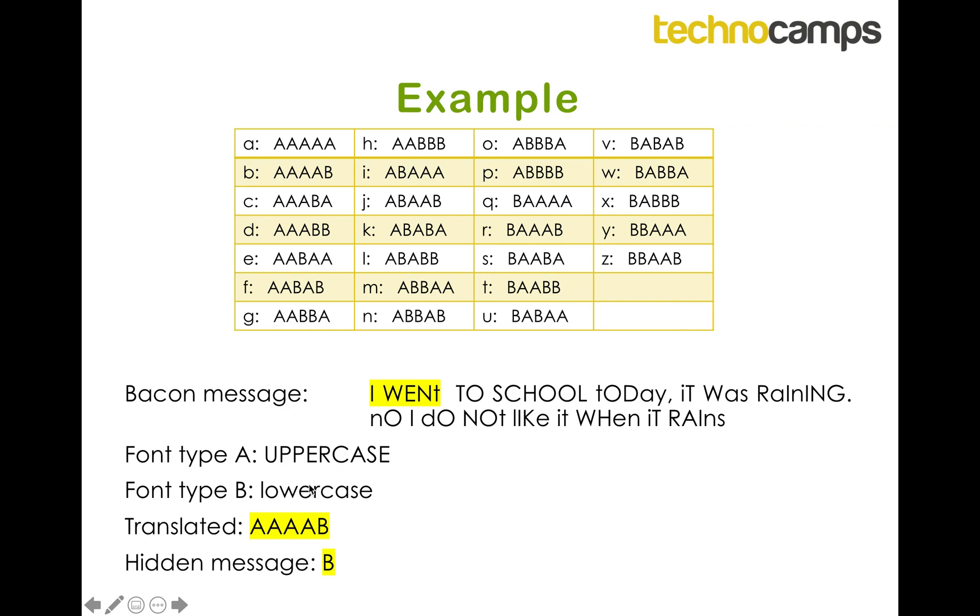an uppercase W, so that'll be an A, an uppercase E, so that'll be an A, an uppercase N, so that will be an A, and then a lowercase t, and that will be a B. So we get AAAAB, we look at the grid at the top for the letter that goes AAAAB, we see that it corresponds to the letter B, so we write down the letter B, that was the first letter that was hidden in this message.